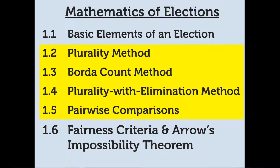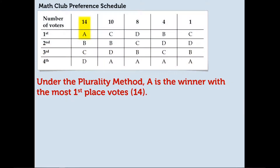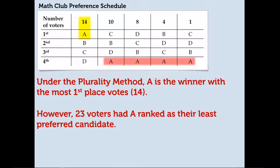In the prior videos we looked at various voting methods to determine a winner in an election. We also saw an example where the winner of an election may not be the candidate that would satisfy the greatest number of people. For example, in the math club president election, under the plurality method A is the winner with the most first place votes. However, 23 voters had A ranked as their least preferred candidate, so a strong argument could be made that A shouldn't have won.